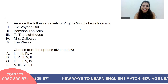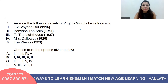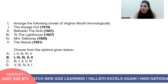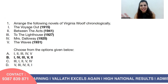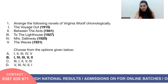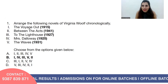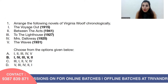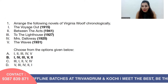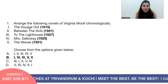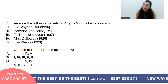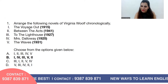It has to be option B, because Between the Acts is her last novel and The Voyage Out is her first. There's only one option with one first and two last — option B. The publication order is: The Voyage Out (1915), Mrs Dalloway (1925), To the Lighthouse (1927), The Waves (1931), and Between the Acts (1941).